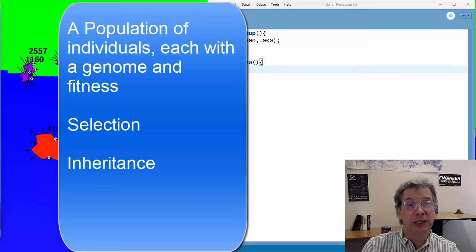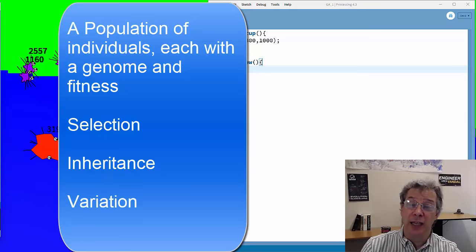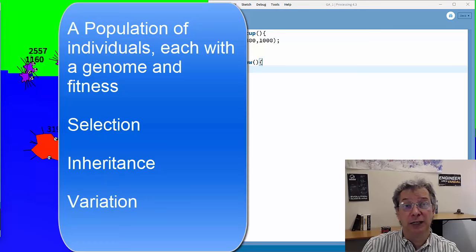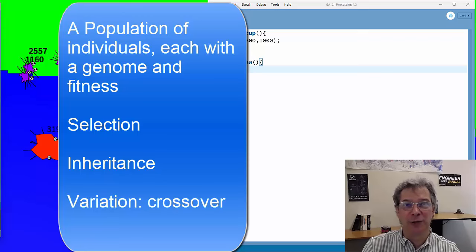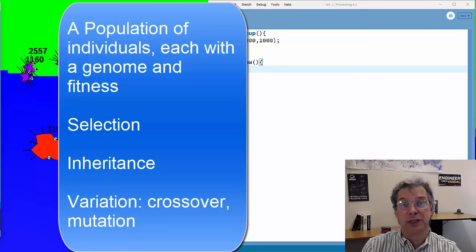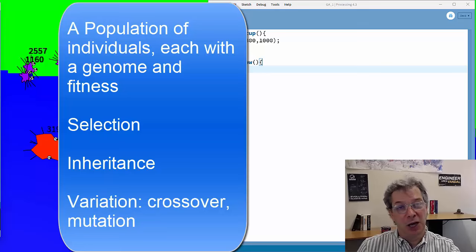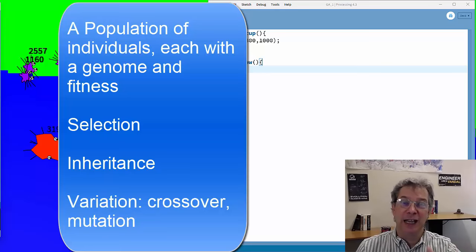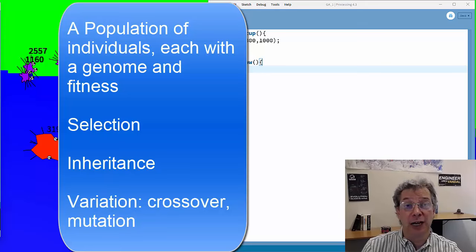The fourth component is variation. In a genetic algorithm, we add variation in two ways: a model of sexual reproduction often referred to as crossover, where we cross genes between two parents, and a random mutation. With those four components — a population of individuals, a selection mechanism, inheritance where DNA is passed from parents to offspring, and variation — we have an evolutionary algorithm.